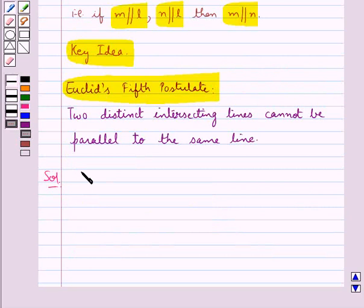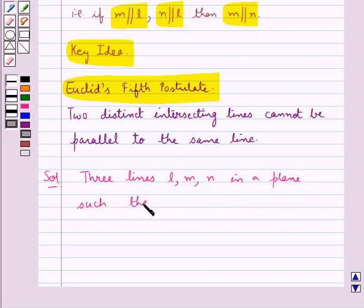We are given three lines L, M, and N in a plane such that M is parallel to L, N is parallel to L.